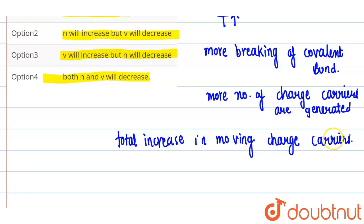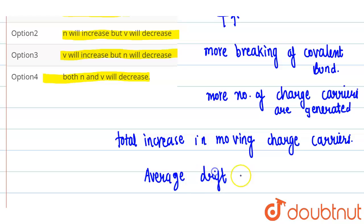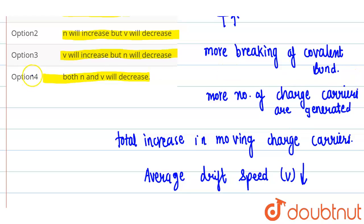If the moving charge carriers increase, then their average drift speed v will decrease. This decrease is due to the increasing probability of collision with the lattice atoms, because the number of charge carriers is more, therefore the probability of collision with the lattice atoms of the semiconductor increases, and hence the average drift velocity decreases.